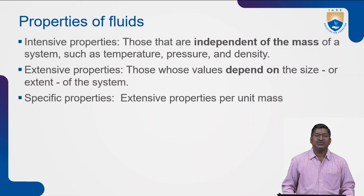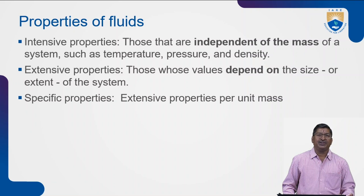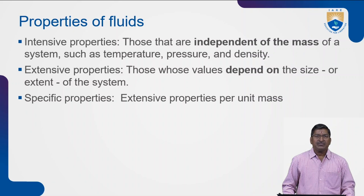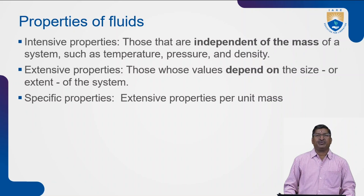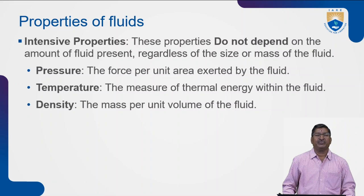Extensive properties are the opposite of intensive properties. Extensive properties depend on the size or extent of the system — if you take 1 kg versus 100 kg of fluid, the properties will differ. Those are called extensive properties. Specific properties are extensive properties per unit mass — whatever the extensive property is per kilogram or per gram of mass, those are called specific properties.